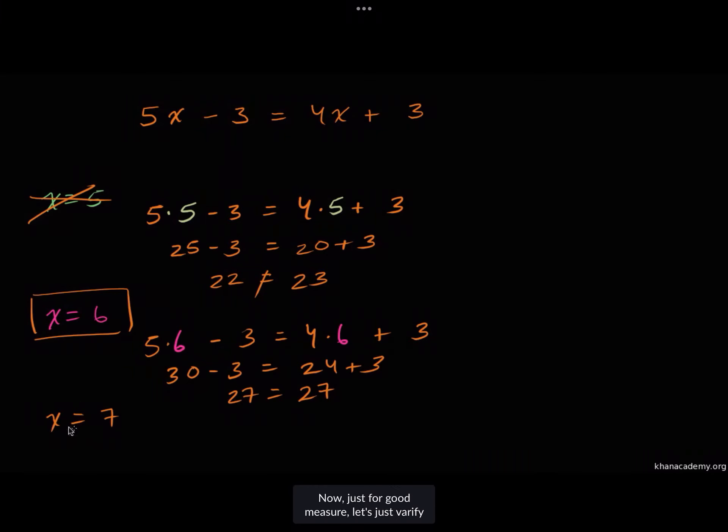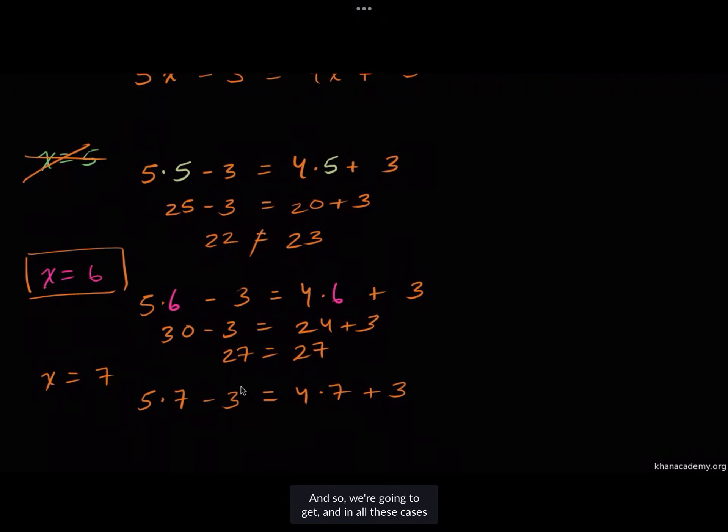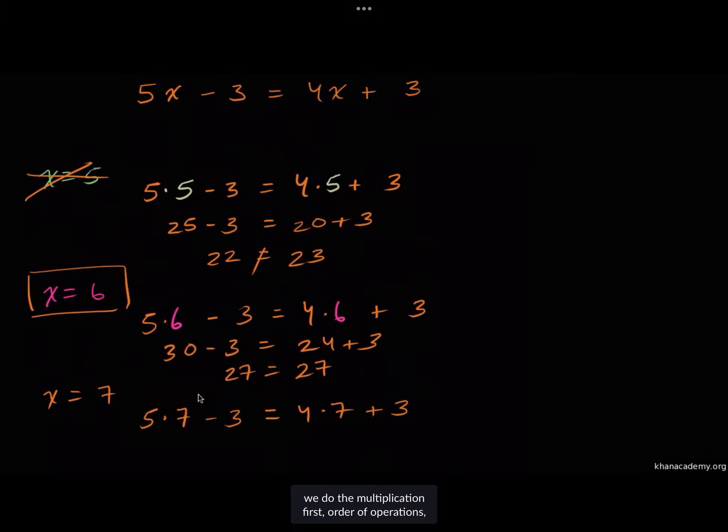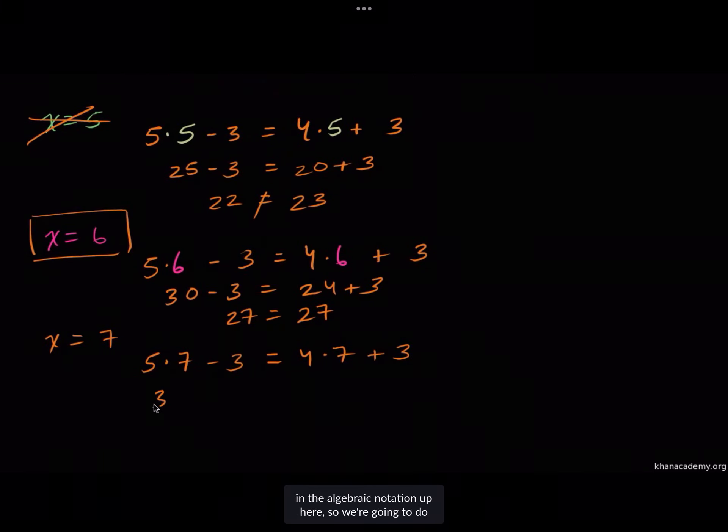Now just for good measure, let's verify that x equals seven will not satisfy it. If x is equal to seven, we're going to get five times seven minus three needs to be equal to four times seven plus three. In all of these cases, we do the multiplication first - order of operations - and it's very clear when you see it in the algebraic notation up here.